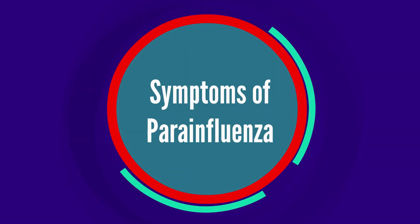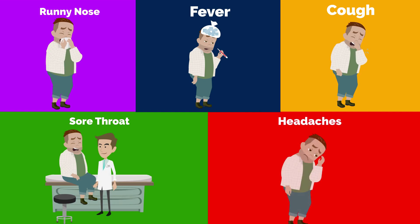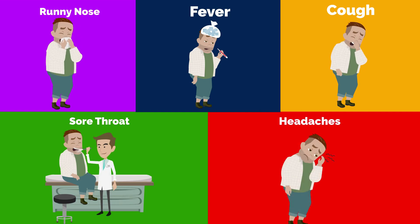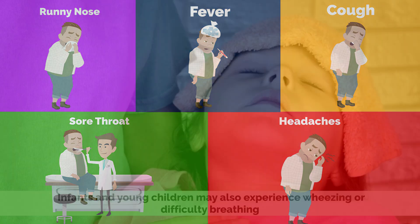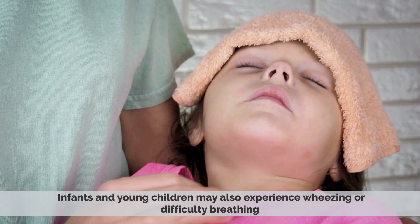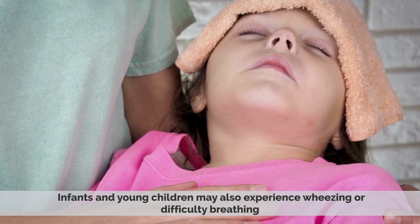The symptoms of parainfluenza vary depending on the type of virus and the person's age. Common symptoms include a runny nose, fever, cough, sore throat, and headaches. Infants and young children may also experience wheezing or difficulty breathing.